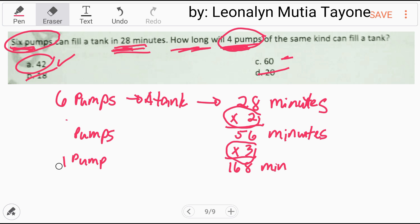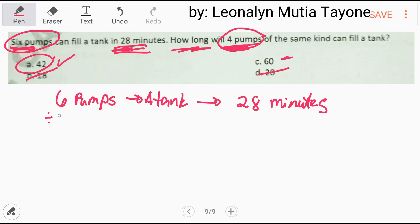I-shortcut natin ito. Doon na tayo direkta sa six. Divided by six para isang pump. Kung nag-divide ka ng six dyan, mag-multiply ka ng six dito. Kasi nga, isang pump na lang, divided by six. Six divided by six equals one. Isang pump na lang ang trabaho. More time. Six times. So 28 times six. Six times yung oras na nabuhuin niya. Kasi isa na lang siyang pump. 28 times six, and that is 168 minutes.